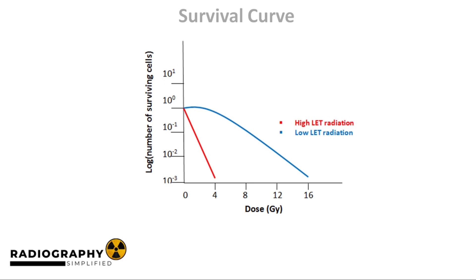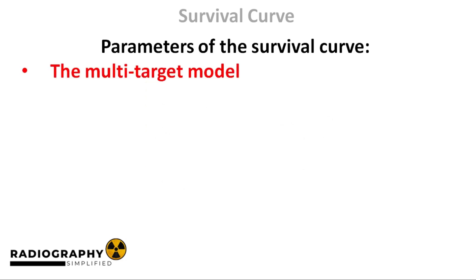At higher doses of low LET radiation, the radiation is able to overwhelm the repair mechanisms of the cell, causing a decline in the number of cells able to survive — demonstrated by the linear decline seen at higher doses. High LET radiation is a lot more intense. Even at low doses, the damage to cells is so great that it is not easily repaired. This is why the high LET curve shows a linear decline all the way, without a shoulder like the one we have in low LET curves.